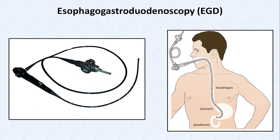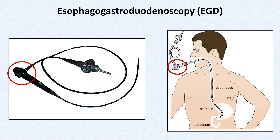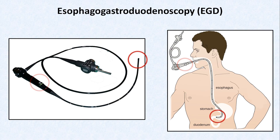This is an endoscope. This end is called the light guide connector, and it attaches to a big cart on which there is a monitor to watch what one is doing in real time. This is the control body or control section, which allows the operator to maneuver the camera. There are also buttons for water flushes and suction. Right about here is an opening to introduce instruments that can be used to deliver therapies. And this is the insertion end that actually goes into the patient, the distal tip of which can bend in different directions under control of the operator.